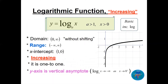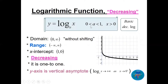Here is a summary of logarithmic functions. When the base a is greater than 1, the function is increasing, x is always greater than 0, and the graph passes through (1, 0) — it is one-to-one. When a is between 0 and 1, such as 1/2 or 1/3, x is still always positive, but the graph is decreasing, also passing through (1, 0).